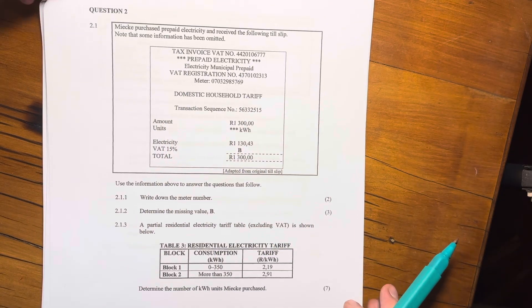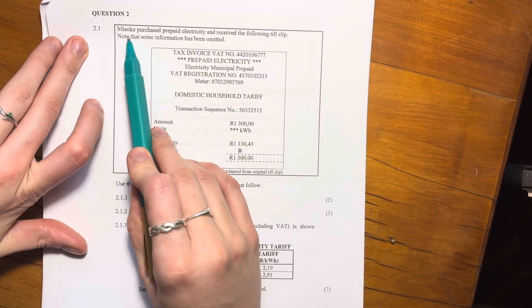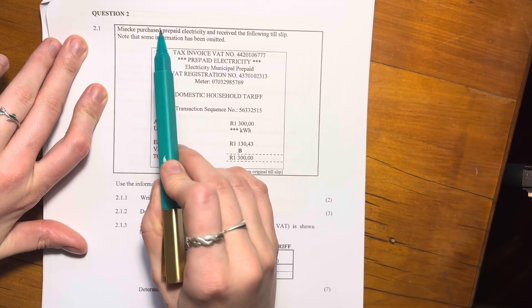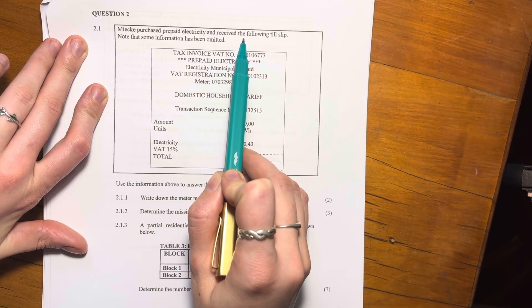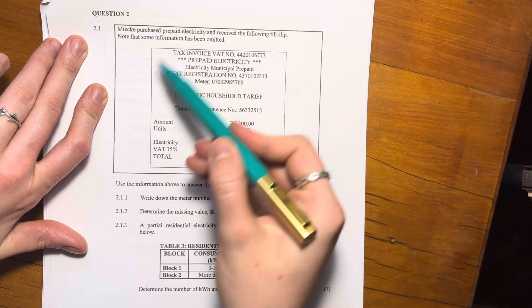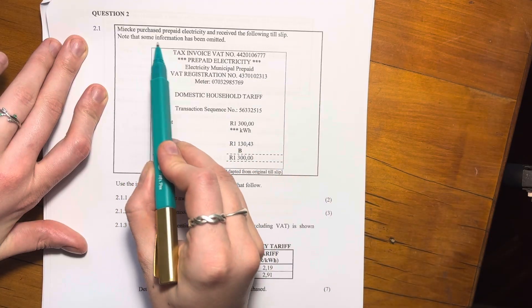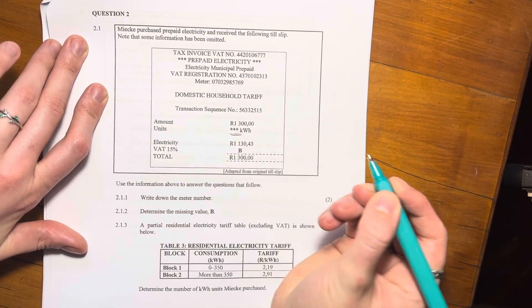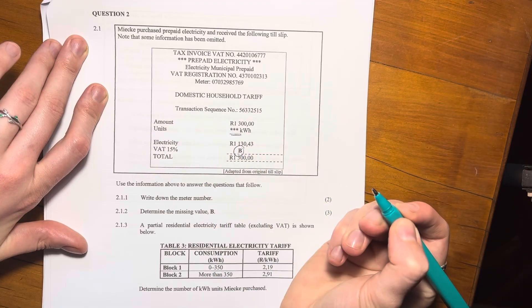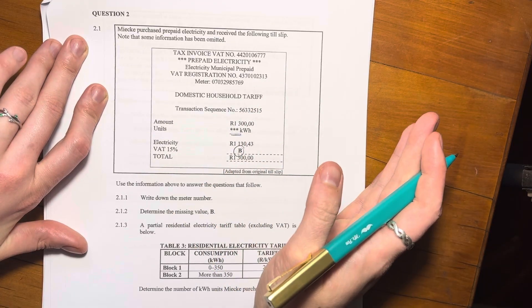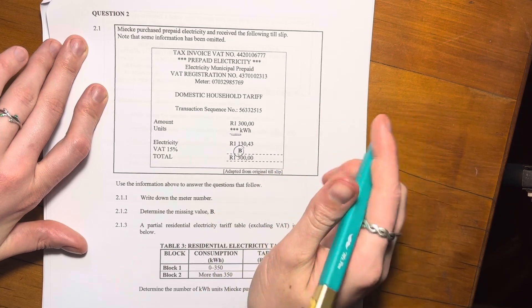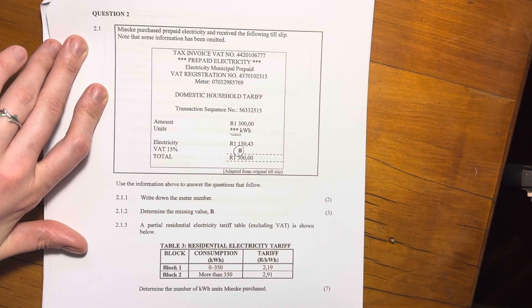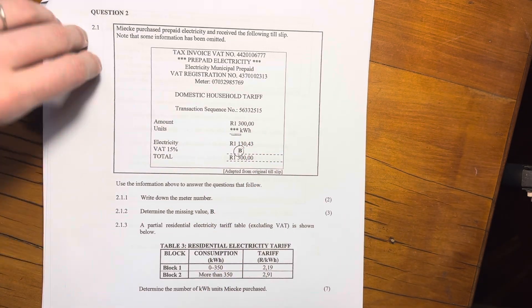Okay, Mike, I'm not sure how you say that, apologies if I said it wrong, purchased prepaid electricity and received the following till slip. Okay, so here's the till slip. Note that some information has been omitted. Okay, what information is omitted? The number of units and the VAT amount. Okay, so we know how these papers are set. You're probably going to have to work out what those two values are, but let's just wait till they ask us.